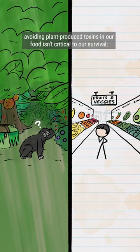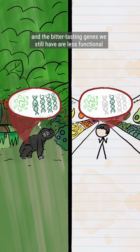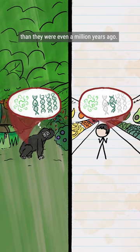Today, for most humans, avoiding plant-produced toxins in our food isn't critical to our survival. And as a result, we've actually lost genes that once helped us taste bitter compounds. And the bitter-tasting genes we still have are less functional than they were even a million years ago.